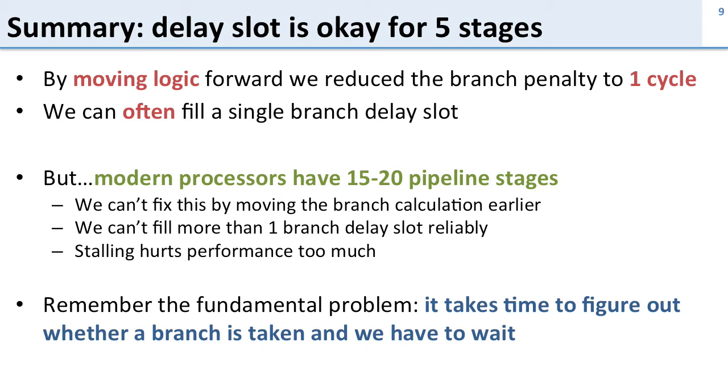So let's go back and see what the fundamental problem was here. That problem was that it takes time to figure out whether a branch is taken, and we have to wait for the branch to resolve before we know what to do. If we have to wait for it to be resolved, the only way around this problem is to predict the future. If we could predict what the branch is going to do before it does it, then we can go ahead and do the right thing ahead of time. And that's what the rest of this lecture is going to be about.